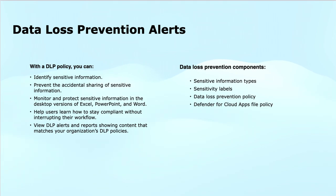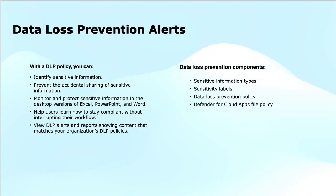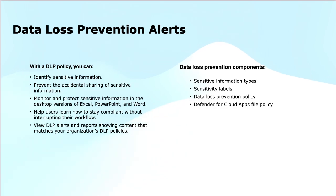The next capability is to prevent the accidental sharing of sensitive information. The DLP helps prevent users from accidentally sharing sensitive data by warning them or blocking the action. For example, if someone tries to email a document with personal information outside the company, DLP can prevent this from happening and notify the user about the potential risk.